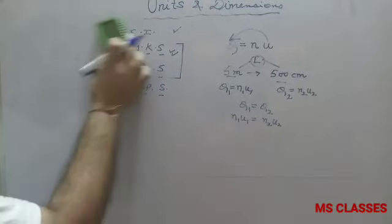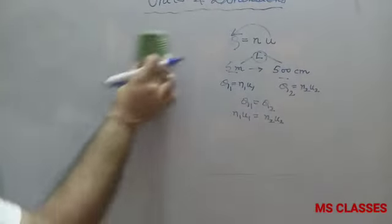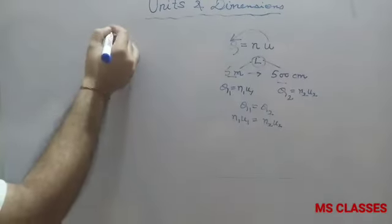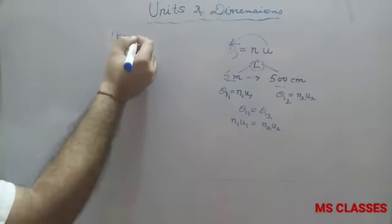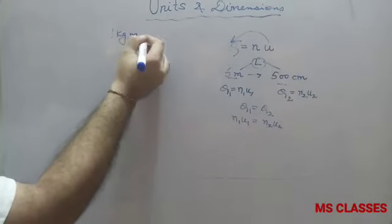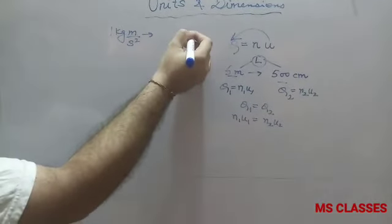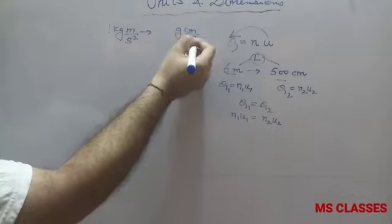Now, how to use N₁U₁ = N₂U₂? Let's understand with the help of one example. I have taken 1 kg·m/s², and we need to convert it to gram·cm/s².